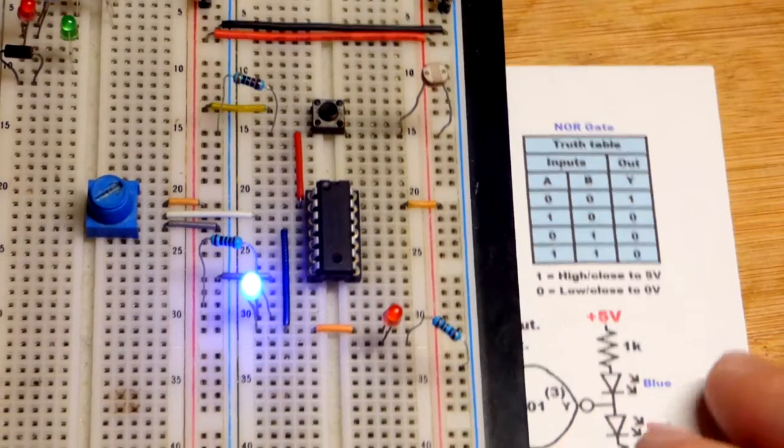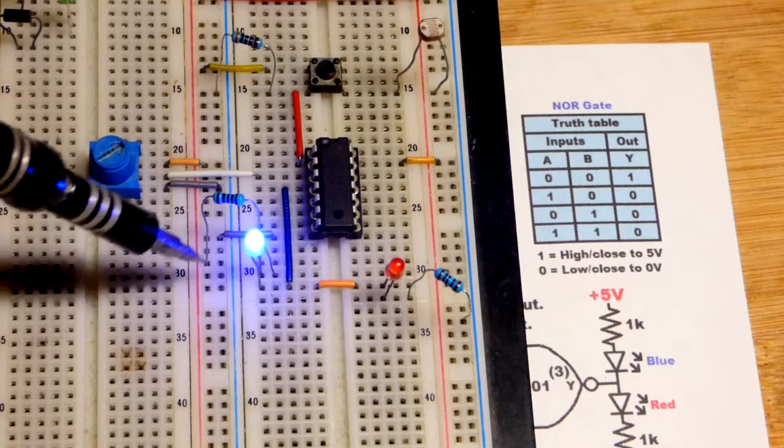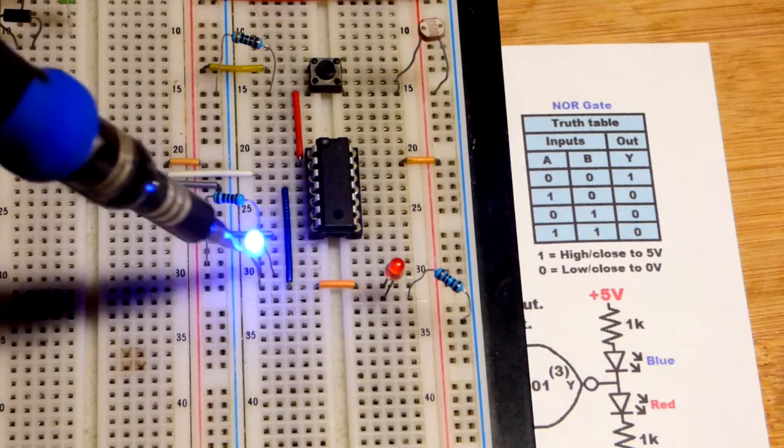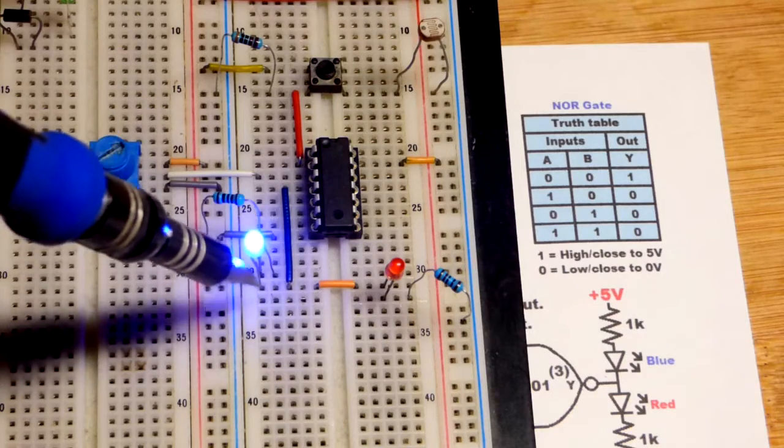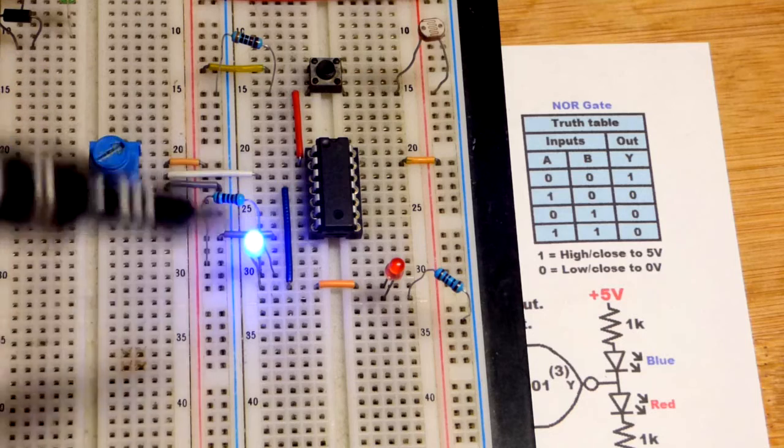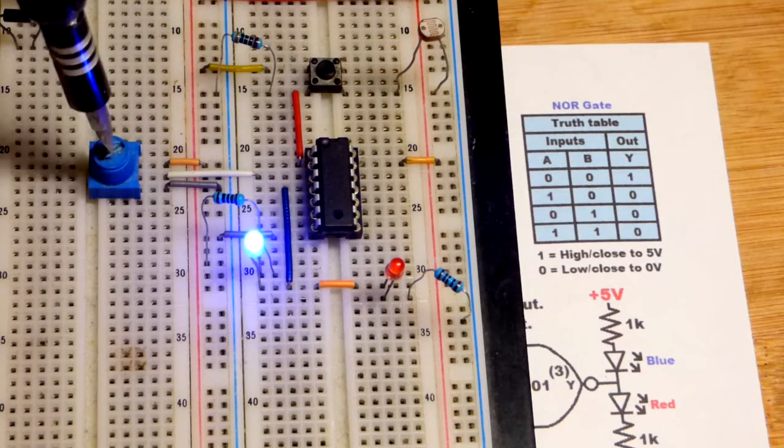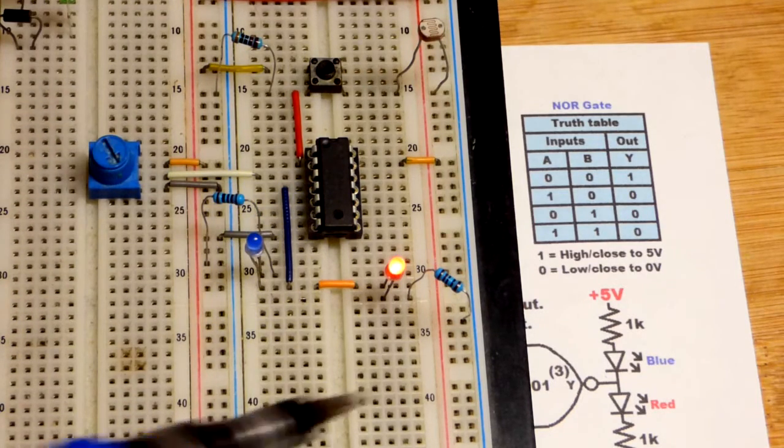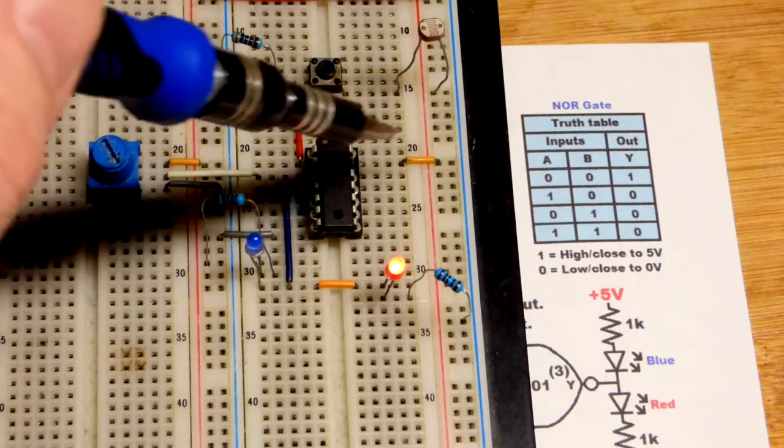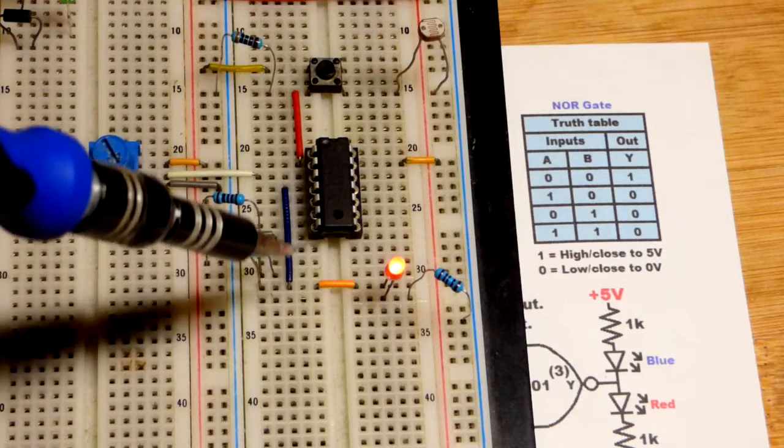You can see we have the 1 kilohm resistor to the positive supply coming to the anode, the long lead of the LED on top. The short lead, the cathode, lets you know it's going to ground because it's lit up. The output has to be coming from the positive supply as best it can to get the red LED to light up.